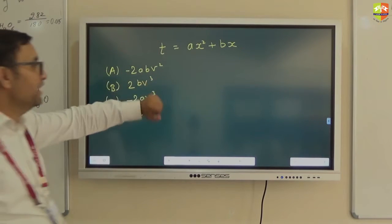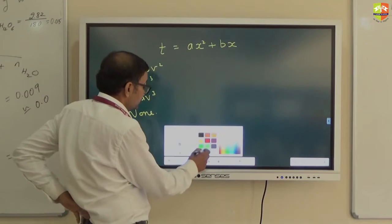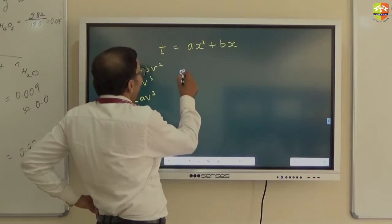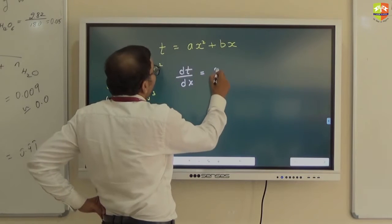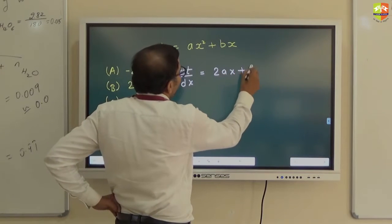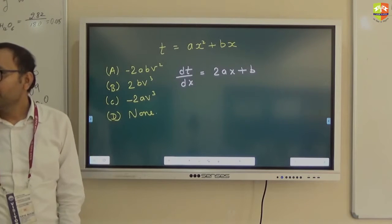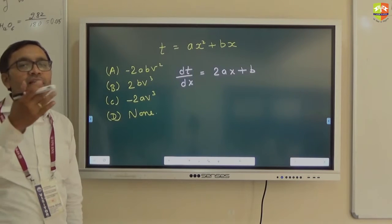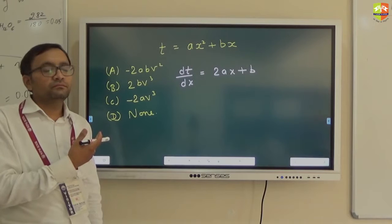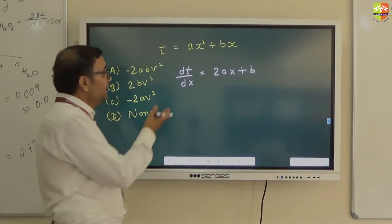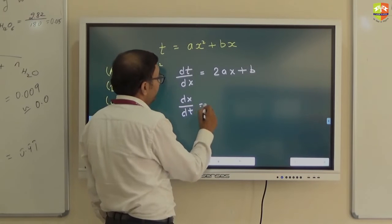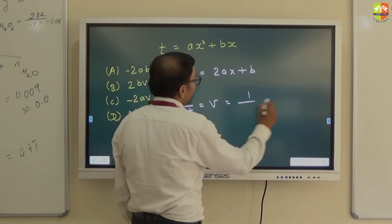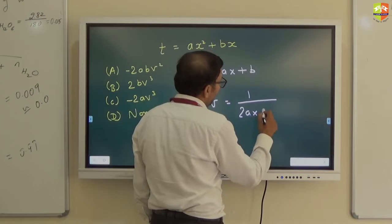Now I will solve this since we are running out of time. I will differentiate it with respect to x. dt by dx is 2ax plus b. Okay? Guys, listen here. Then inverse of this is dx by dt, which is my velocity. That is 1 divided by 2ax plus b.